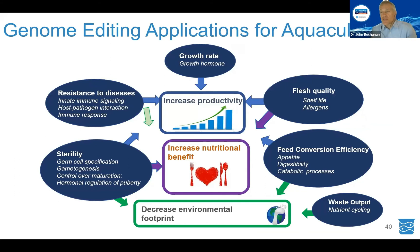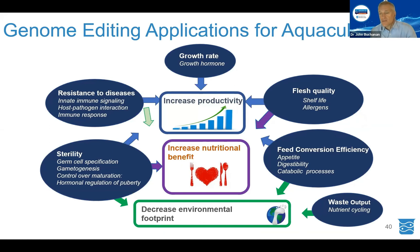The applications are significant. You can imagine influencing growth rates, resistance to diseases, sterility, consumer-oriented traits like flesh quality and nutrition, feed conversion efficiency, and environmental applications and sustainability. This is not meant to replace existing breeding tools, but rather is another tool in the toolbox — a supplement to a normal breeding program where for a specific trait you can create significant advancement in a very short period of time.